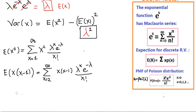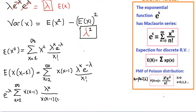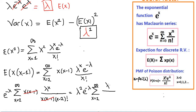So we start from 2 to infinity and take e to the negative lambda out front. We have e to the negative lambda times the summation from x equals 2 to infinity of x times (x minus 1) times lambda to the x, over x times (x minus 1) times (x minus 2) factorial — expanding x factorial two steps to cancel the full x times (x minus 1). Our next step is to make the power of lambda look like x minus 2, so we take two factors of lambda outside, giving lambda squared times e to the negative lambda times the summation of lambda to the (x minus 2) over (x minus 2) factorial.